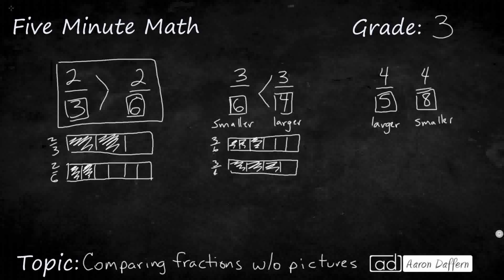So, the smaller the number, the larger the pieces, if it's in the denominator. And the larger the number, the smaller the pieces in the denominator. So, we can look at it like this. 4-5ths is greater than 4-8ths.